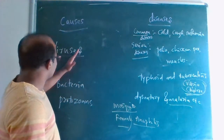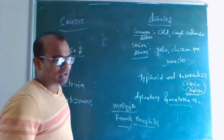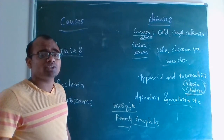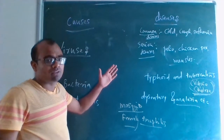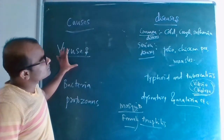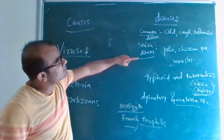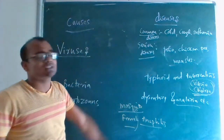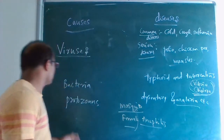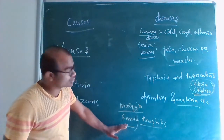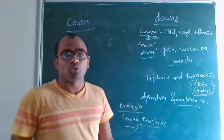So to summarize: viruses, bacteria, and protozoa all cause diseases. Viruses cause common diseases — cold, cough, influenza — and serious diseases — polio, chicken pox, measles. Bacteria cause typhoid and tuberculosis. Protozoa cause dysentery and malaria.